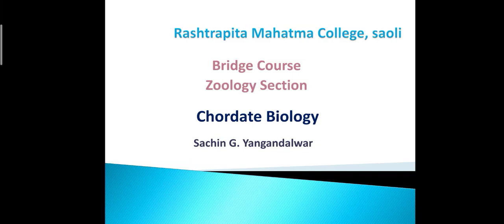Hello friends, welcome to the bridge course for Chordate Biology. Animals which have a notochord in their bodies are included in Chordata, and such biology is called Chordate Biology. In past videos we completed our discussion on Agnatha division, which includes the class Cyclostomata. We also got information on Gnathostomata, which consists of two superclasses: Pisces and Tetrapoda, covering salient features and examples of Pisces.